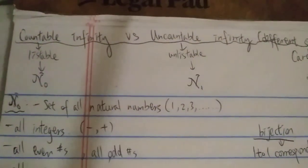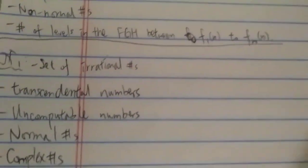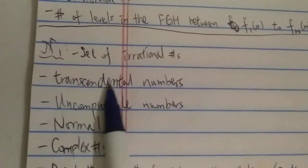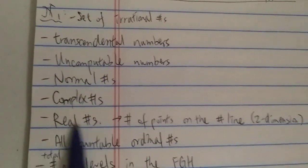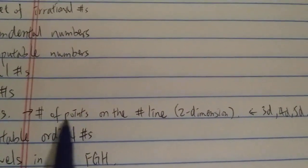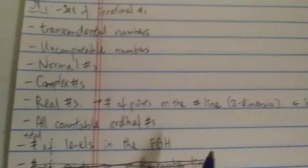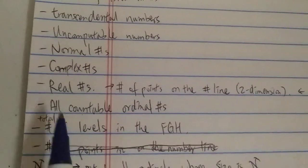The second kind of infinity is uncountable infinity, which is ℵ₁. ℵ₁ is actually bigger than ℵ₀ — you can say it's infinitely bigger. Examples include the set of all irrational numbers, all transcendental numbers, all uncomputable numbers, all normal numbers, all complex numbers, all real numbers, and also all the countable ordinals.